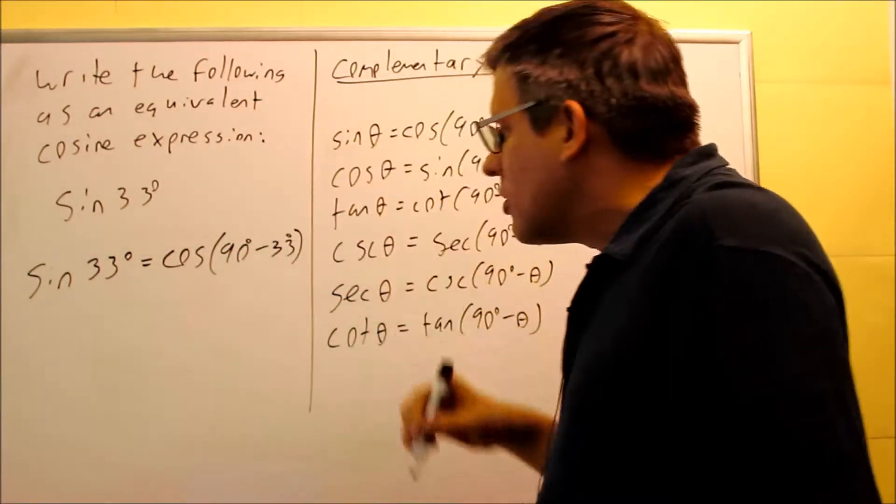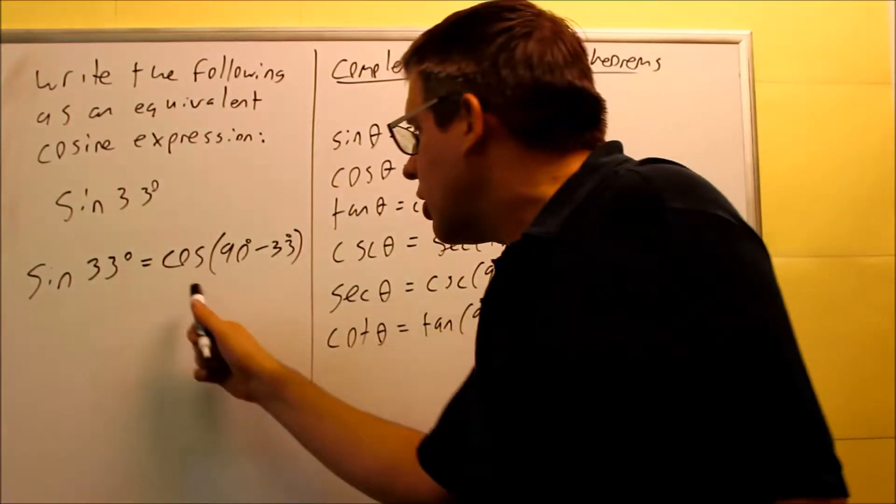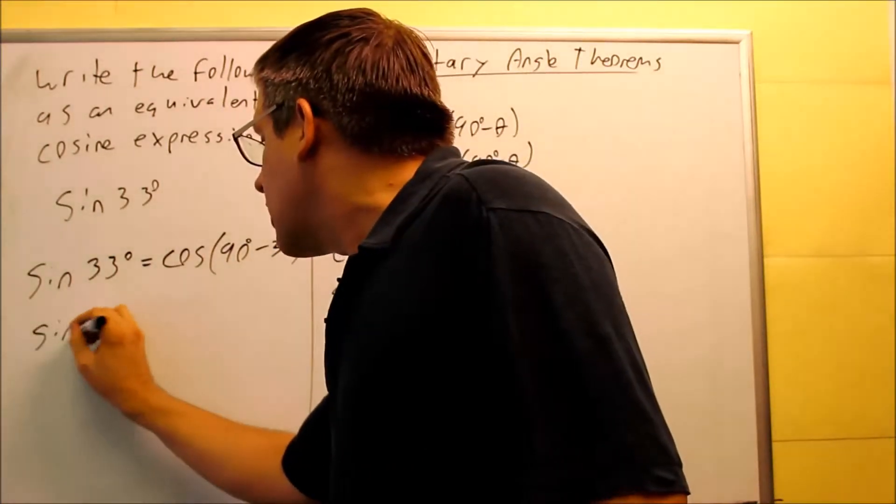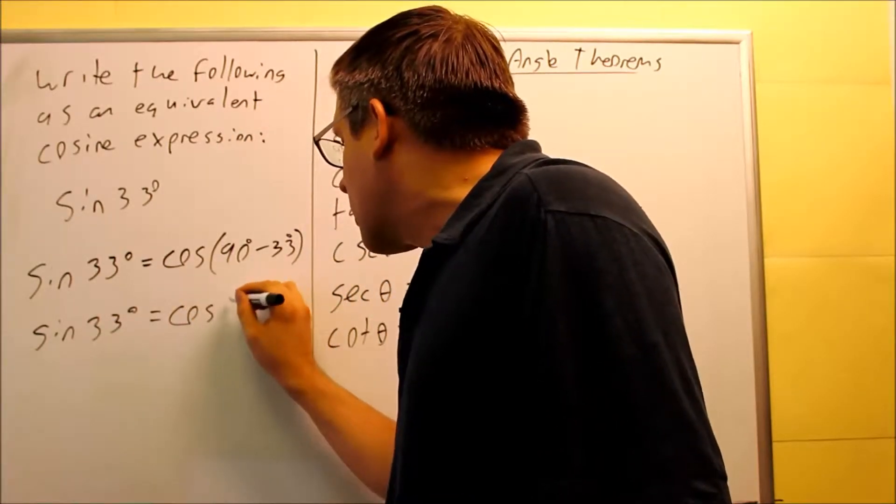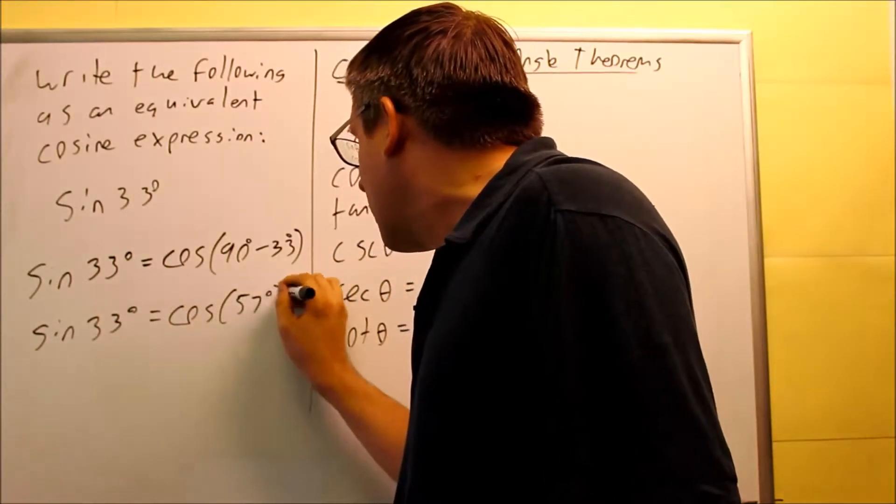So both of these are going to be in terms of degrees. When we subtract them, you're going to get 57 inside here. Which means that sine 33 degrees is the same thing as cosine of 57 degrees.